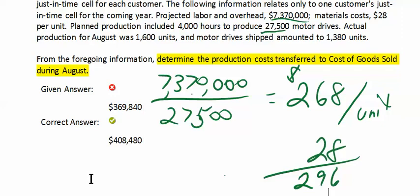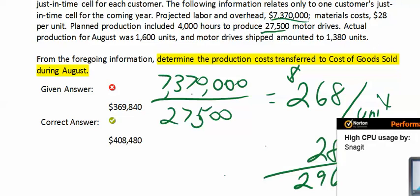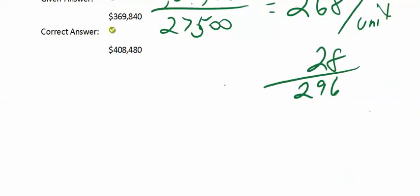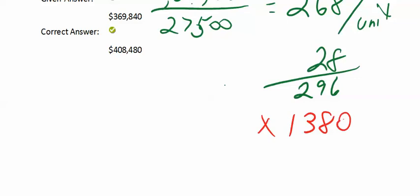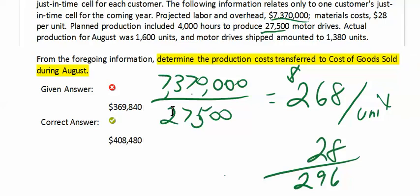The question asks for the cost of units transferred to cost of goods sold — that's the number of units that were sold or shipped. So I'll multiply $296 times 1,380 units, and I get $408,480. That's the amount transferred to cost of goods sold for August.